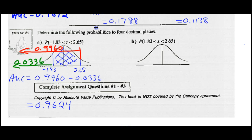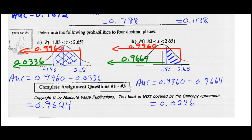Pause the recording and try part B on your own. The answer: the area left of Z = 1.83 is 0.9664, and the area left of Z = 2.65 is 0.9960. To find the shaded blue section, subtract: 0.9960 minus 0.9664 equals 0.0296.